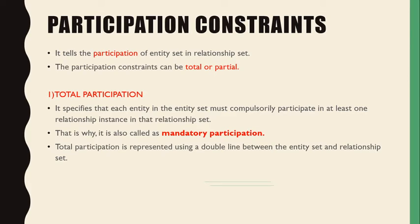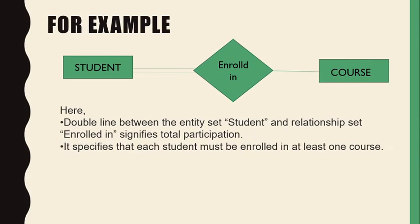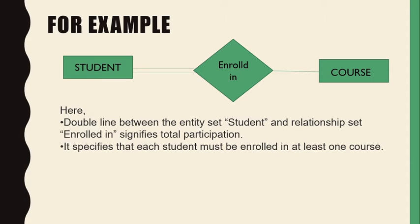Total participation is represented using double lines between the entity set and the relationship set. For example, here R is a relationship set and E is an entity with total participation, meaning compulsory participation in the relationship set. In the diagram, student enrolled in a course — the double lines between entity set Students and relationship set Enrolled In signify total participation, specifying that each student must be enrolled in at least one course.